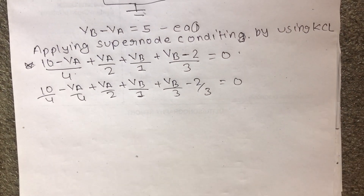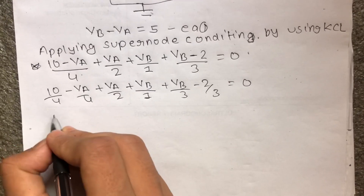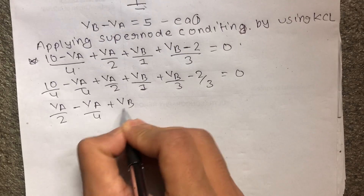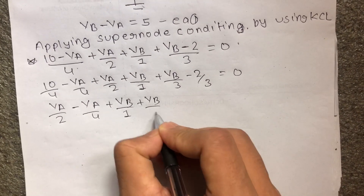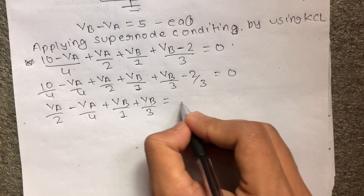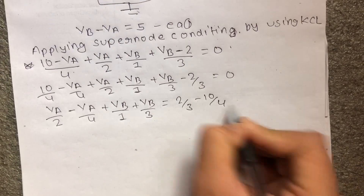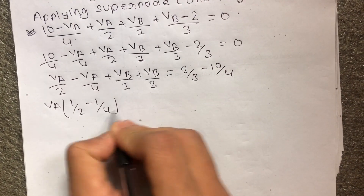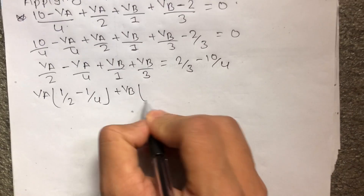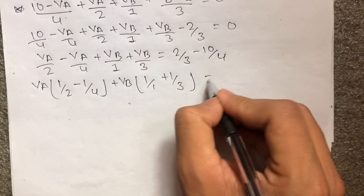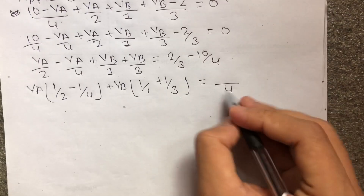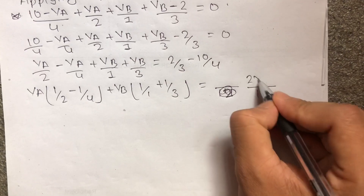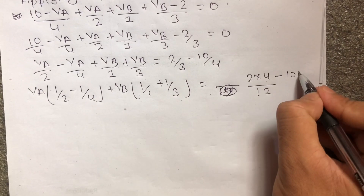Rearranging the terms: VA by 2, minus VA by 4, plus VB by 1, plus VB by 3, equals 2 by 3, minus 10 upon 4. Taking the LCM: VA times (1/2 minus 1/4) plus VB times (1 plus 1/3) equals (2 into 4 minus 10 into 3).